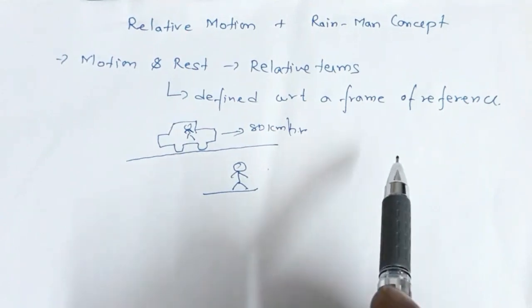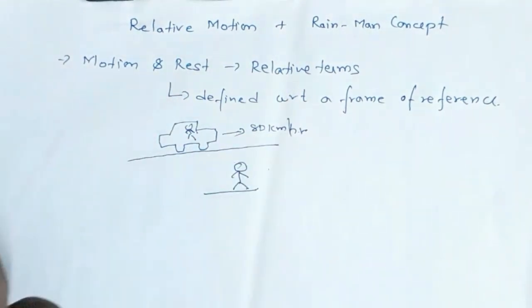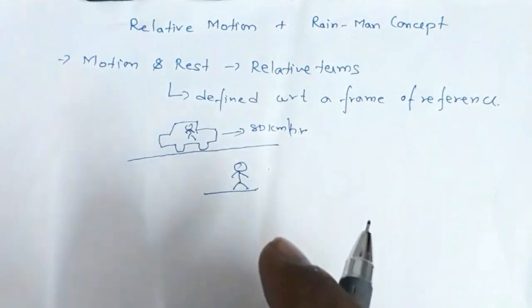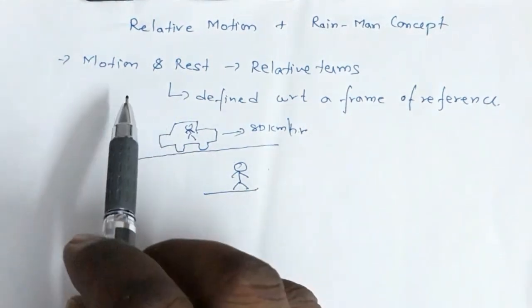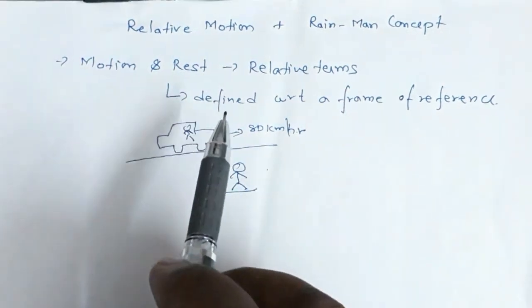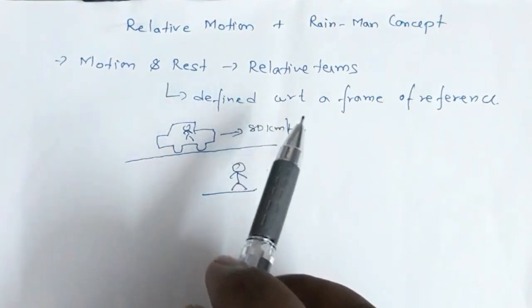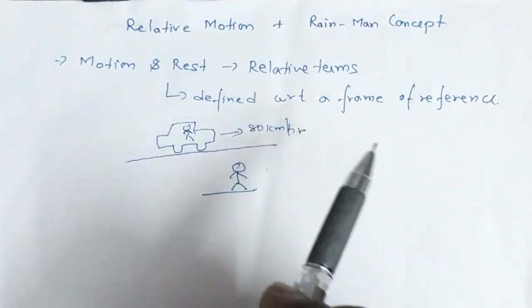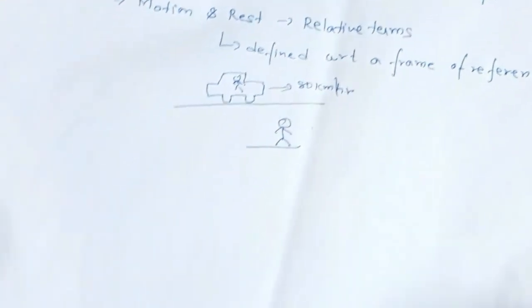They are defined always with reference to a frame of reference. The types of frames of reference and their details we will study in the chapter on laws of motion. Here, we need this basic understanding that to define the motion or state of rest of a body, we need to define the frame of reference.